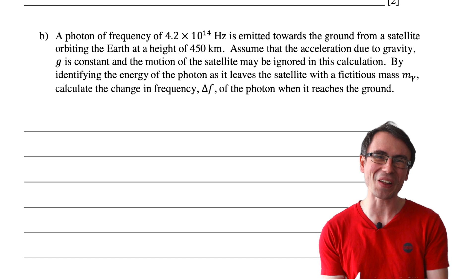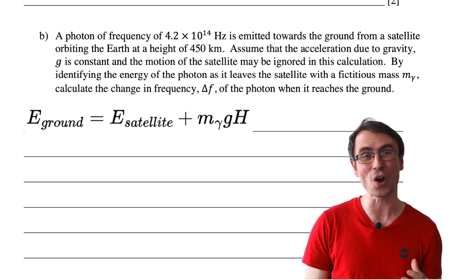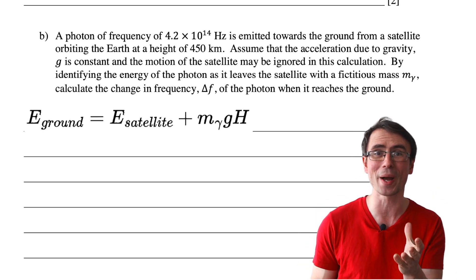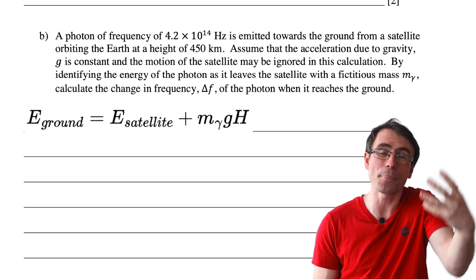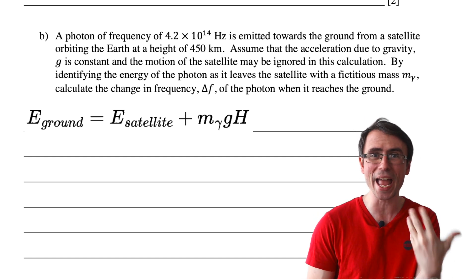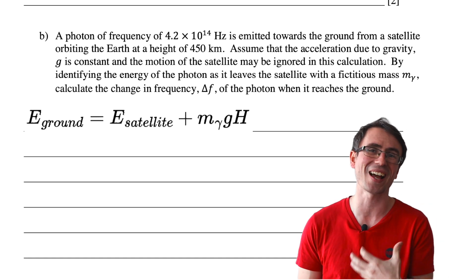The best way to start this question is by looking at the fact that the energy of the photon on the ground will be the sum of the original energy that it had up high in the satellite plus the potential energy. And in this case, we can just assume that this is equal to mγ, where this fictitious mass, multiplied by g multiplied by the height h.